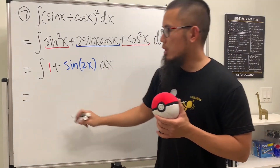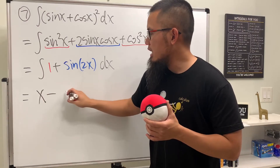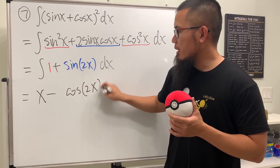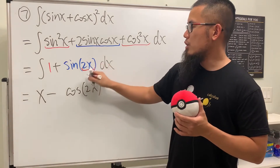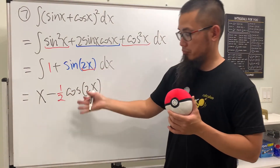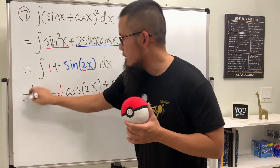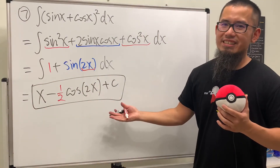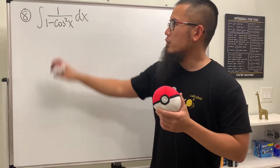Integrating 1 in the x world gives x. Integrating sine of 2x gives negative cosine of 2x, and the derivative of 2x is 2 so we divide by 2. So the answer is x minus one half cosine of 2x, plus c. That's it for number seven.